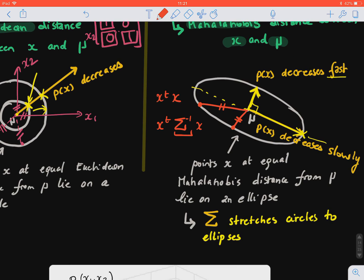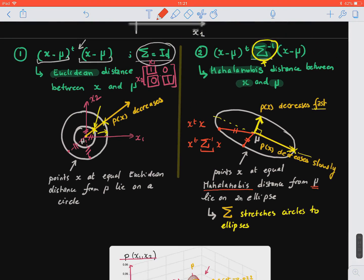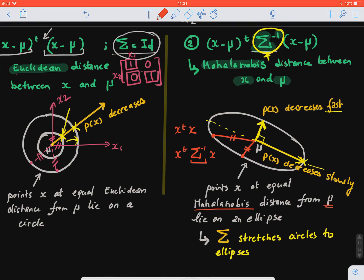So all points at equal Mahalanobis distance from μ, the center, the mean, lie on an ellipse. And how can you think of generally the covariance matrix? What does it do to the space or the data distribution? It generally stretches it, it scales the data distribution along different axes.